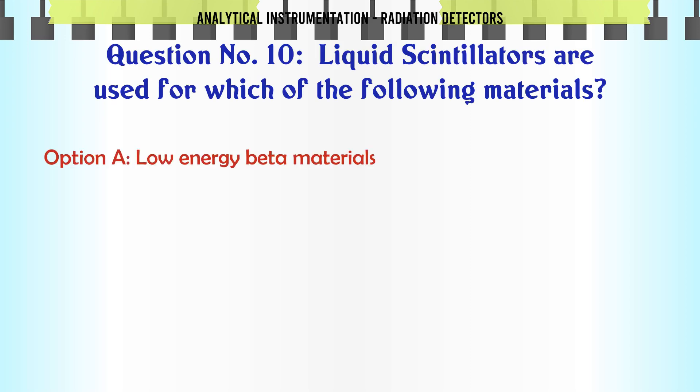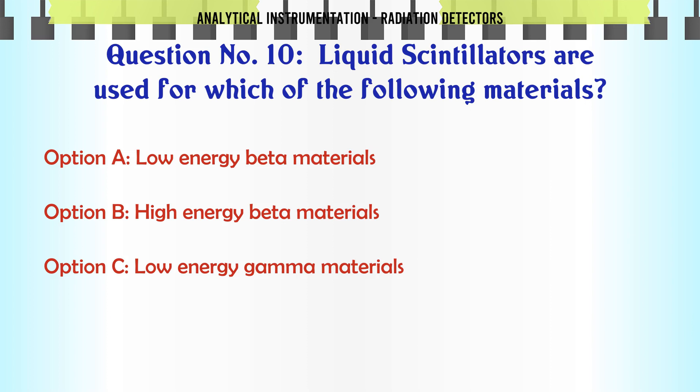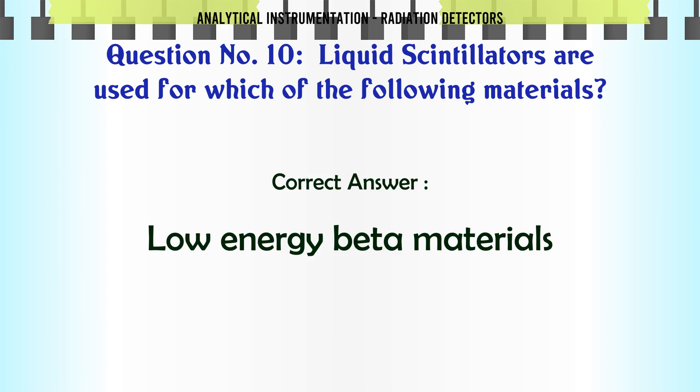Liquid scintillators are used for which of the following materials? A. Low energy beta materials. B. High energy beta materials. C. Low energy gamma materials. D. High energy gamma materials. The correct answer is Low energy beta materials.